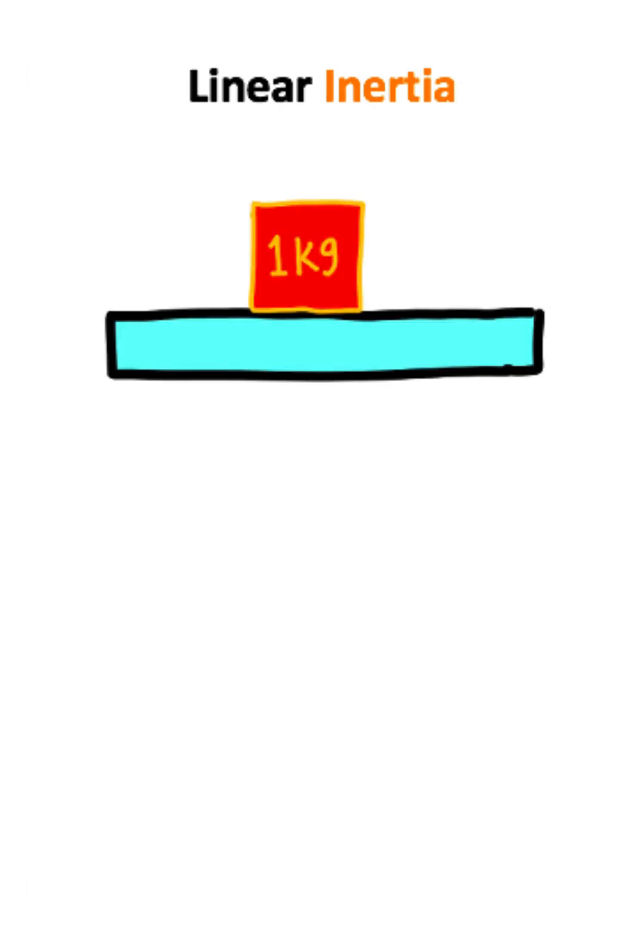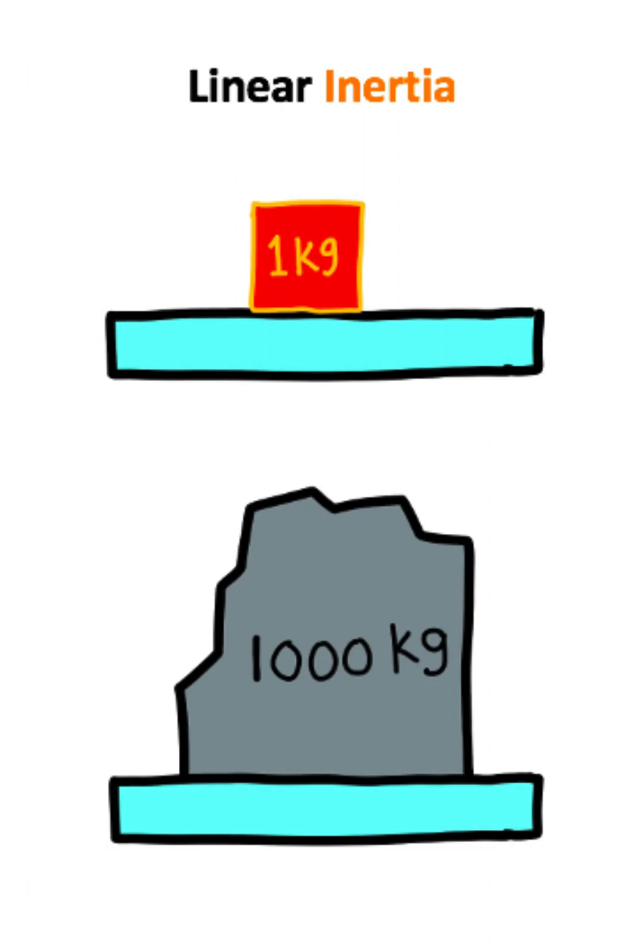Linear inertia describes how difficult it is to change the motion of an object. Let's say we have a 1 kilogram box and a 1,000 kilogram rock. Which one of these objects has a larger inertia? Well, the answer is pretty intuitive. The rock has a higher inertia than the box because the rock has more mass.